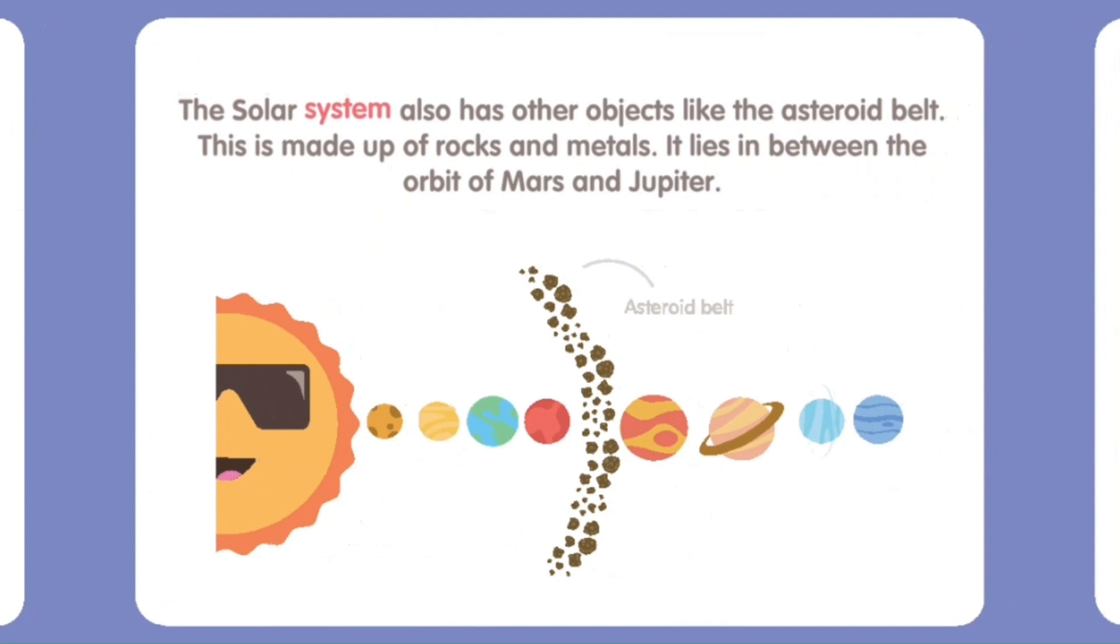The solar system also has other objects like the asteroid belt. This is made up of rocks and metals. It lies in between the orbit of Mars and Jupiter.